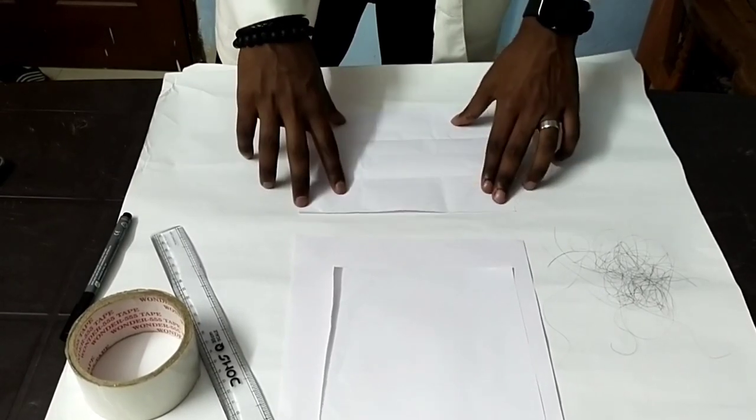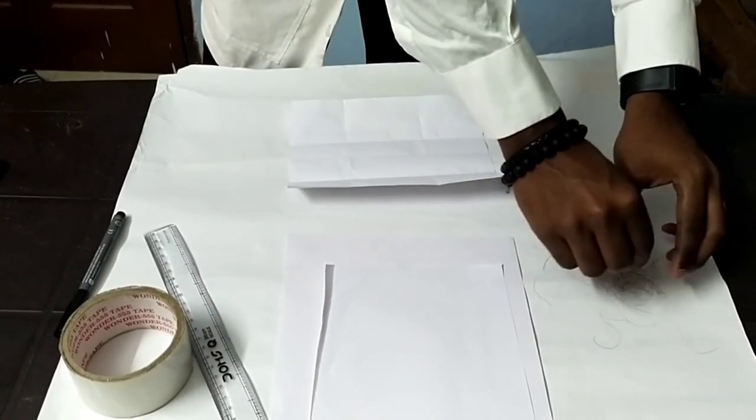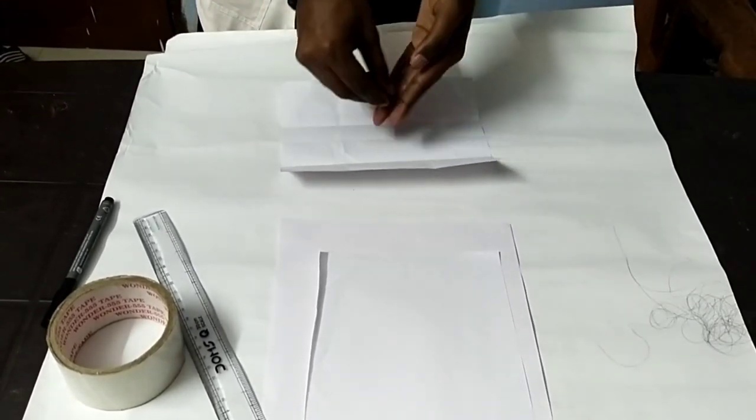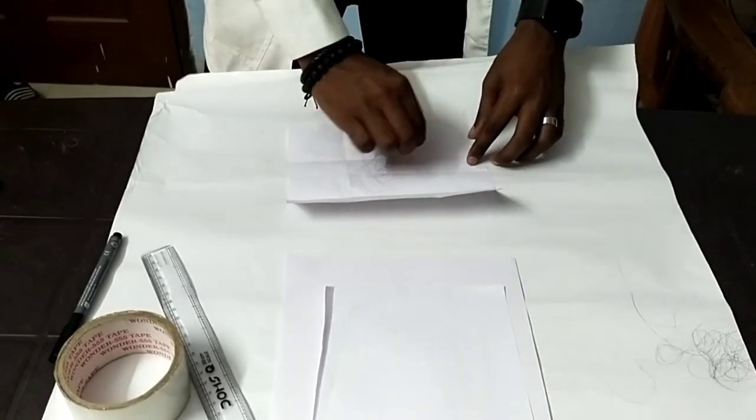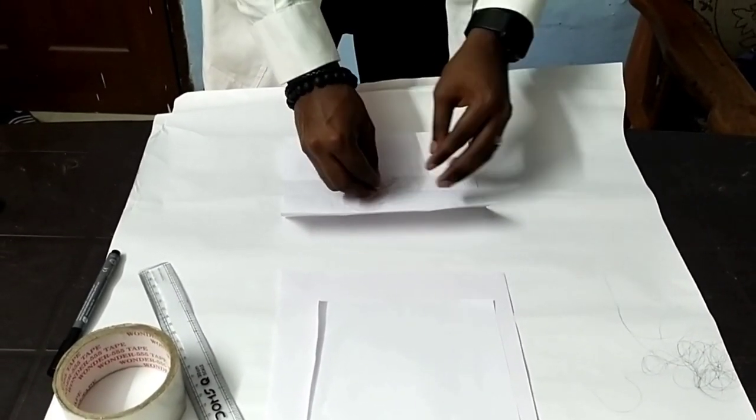Place the hair sample in the center of the square. So I have taken a bit of hair samples. Now I would like to take this pinch of hair sample and place it inside the center of this paper.